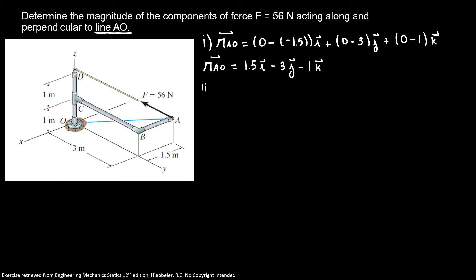Now, I'm going to find my magnitude of the vector AO. So I have the square root of 1.5 squared plus negative 3 squared plus negative 1 squared. So the magnitude of my vector is equal 3.5 meters.